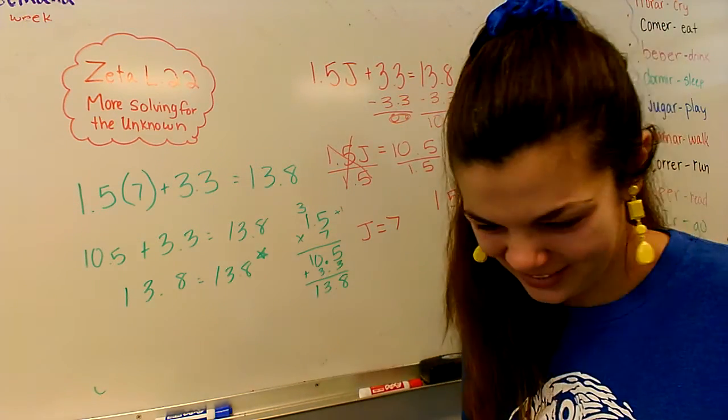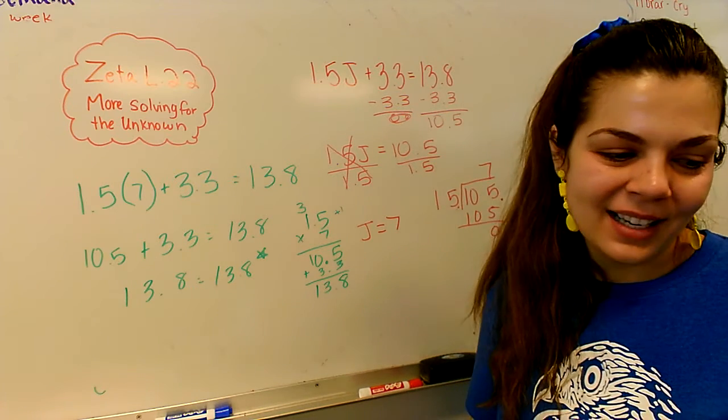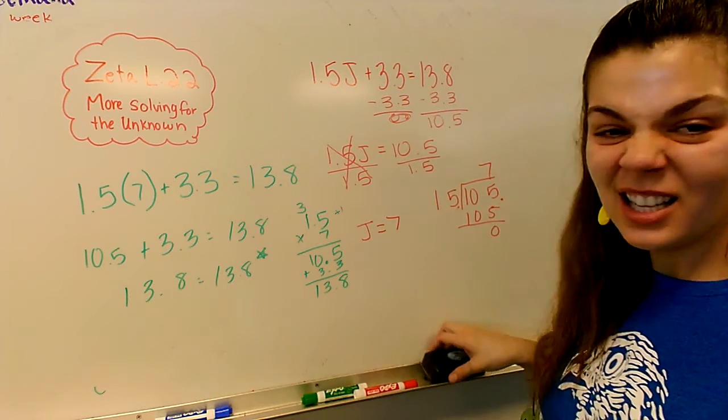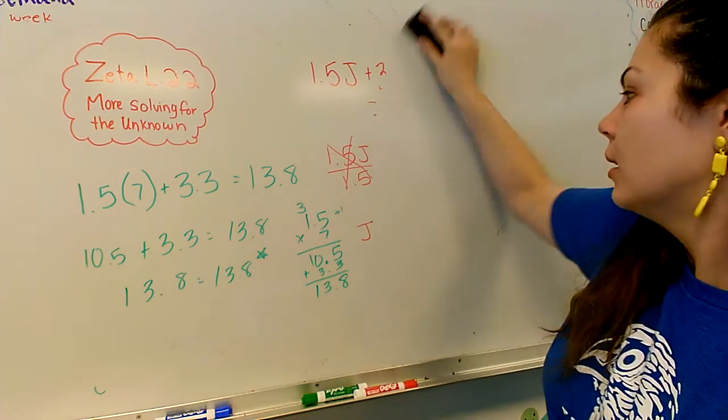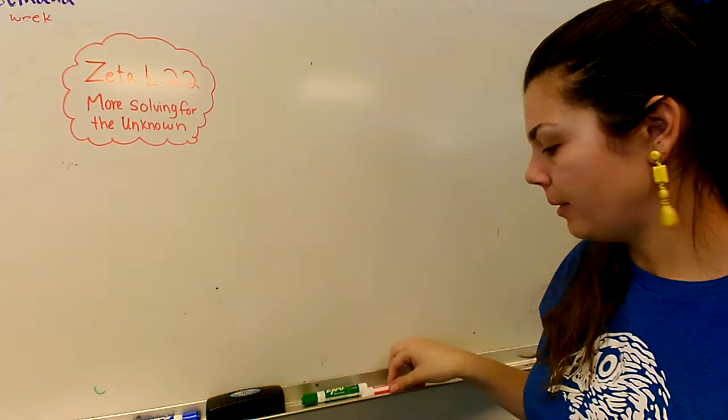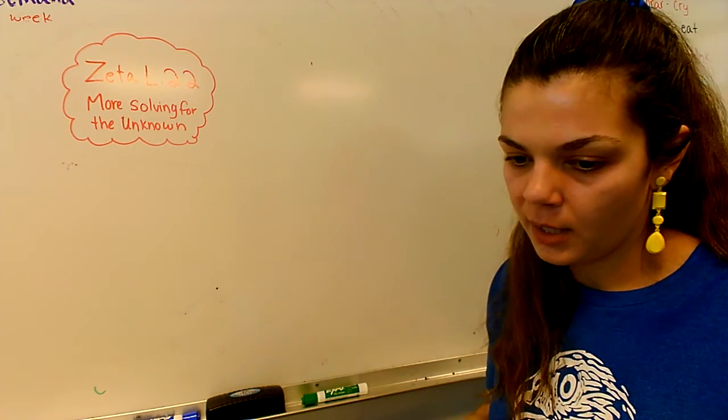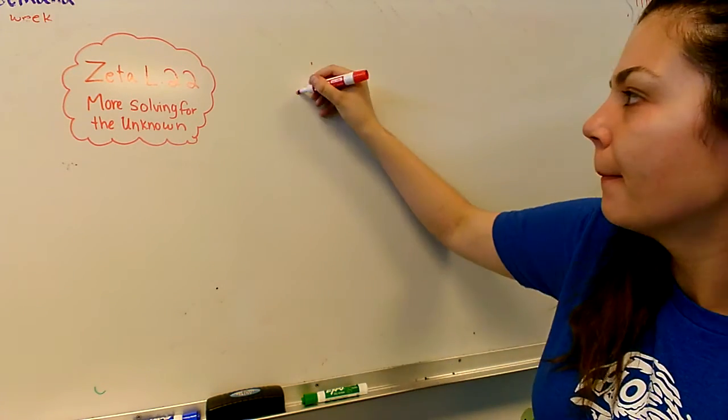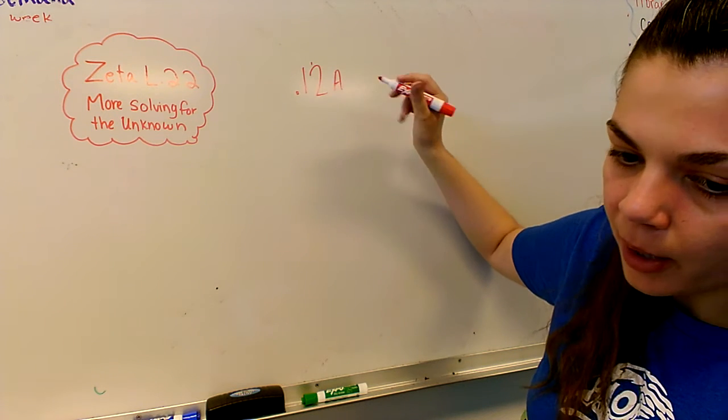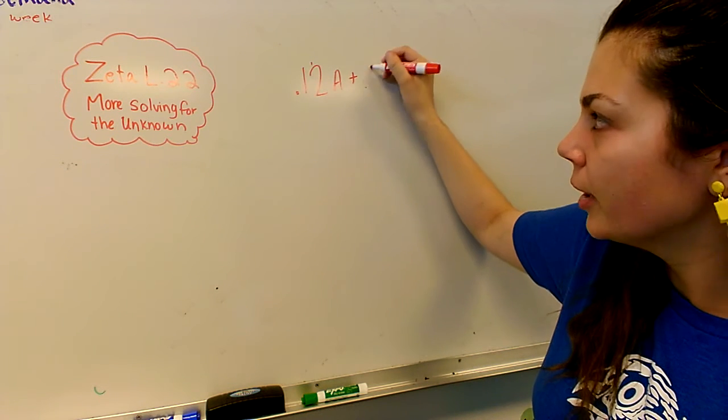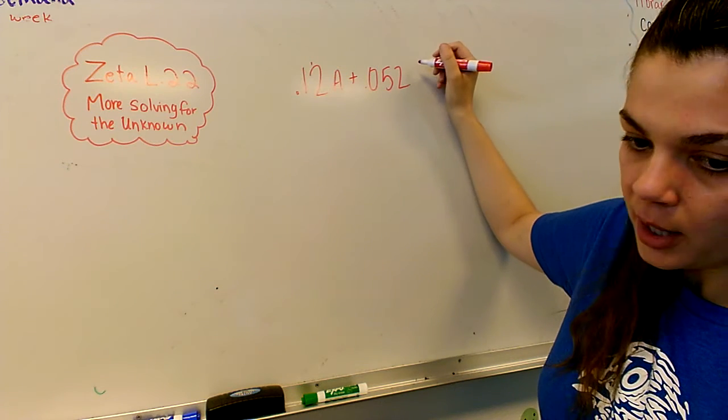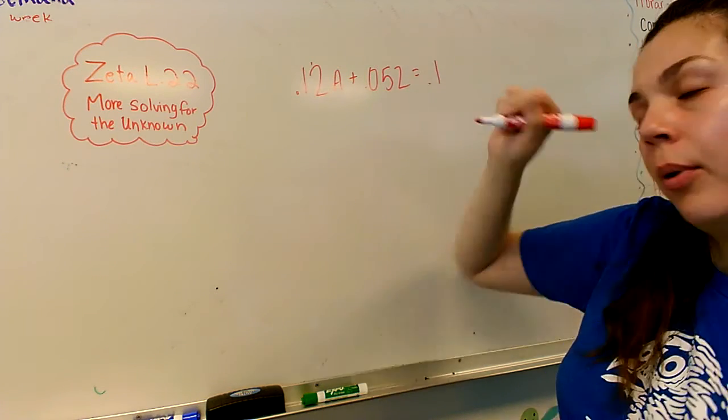We got it. Two in a row. All right. So this last one that I've got for you is, I'm showing because it's a little bit bigger. Just a little bit more division in it. Okay, 0.12a plus 0.052 equals 0.1.